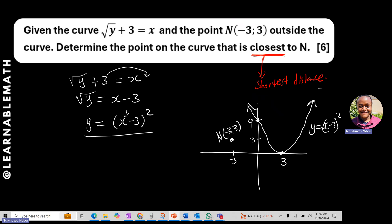The question asks: what is the point (x, y) on the curve that ensures the distance to N is the smallest — the minimum? This is an application of calculus where we are trying to minimize the distance between the two points in order to find the point on the curve closest to N.